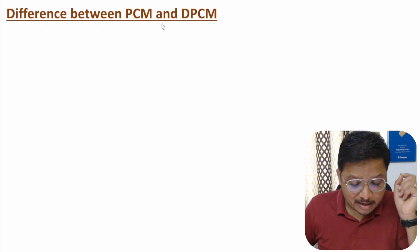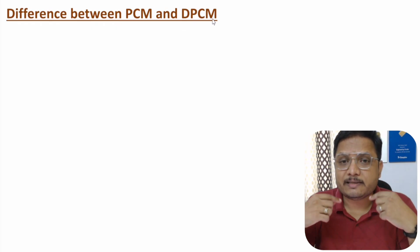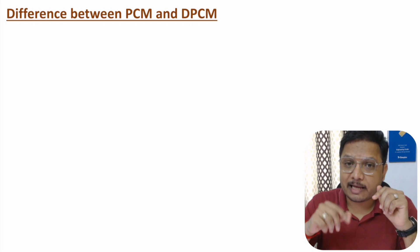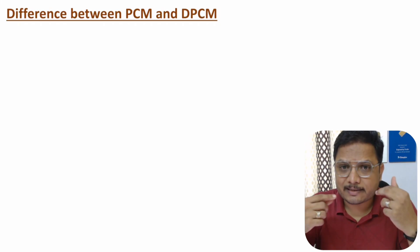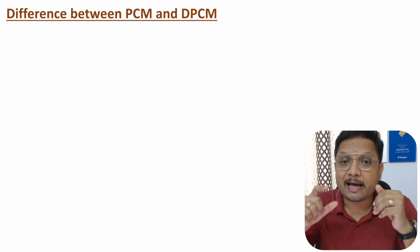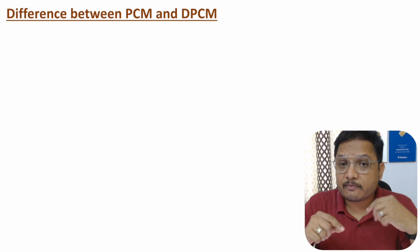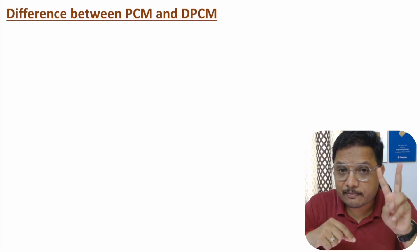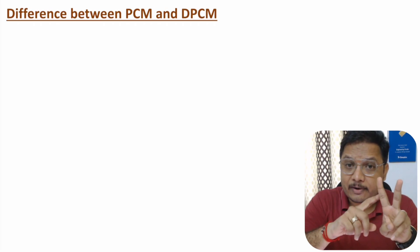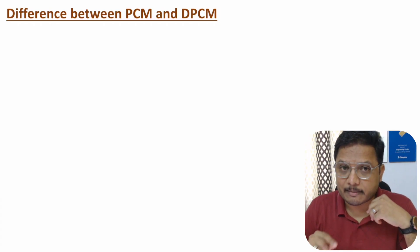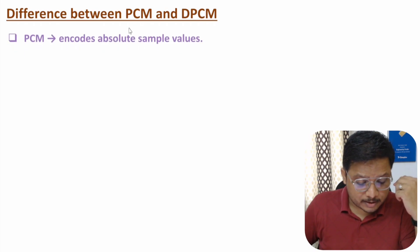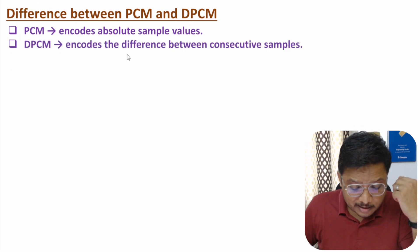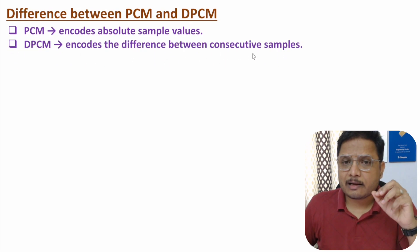Let us start with the difference between PCM and DPCM. In PCM (Pulse Code Modulation), first we perform sampling, then quantization, and based on quantization we encode each and every sample. In Differential PCM, first we do sampling, then we take the difference between two consecutive samples, and that difference is what we encode. So in PCM we encode absolute sample values, while in DPCM we encode the difference between consecutive samples.